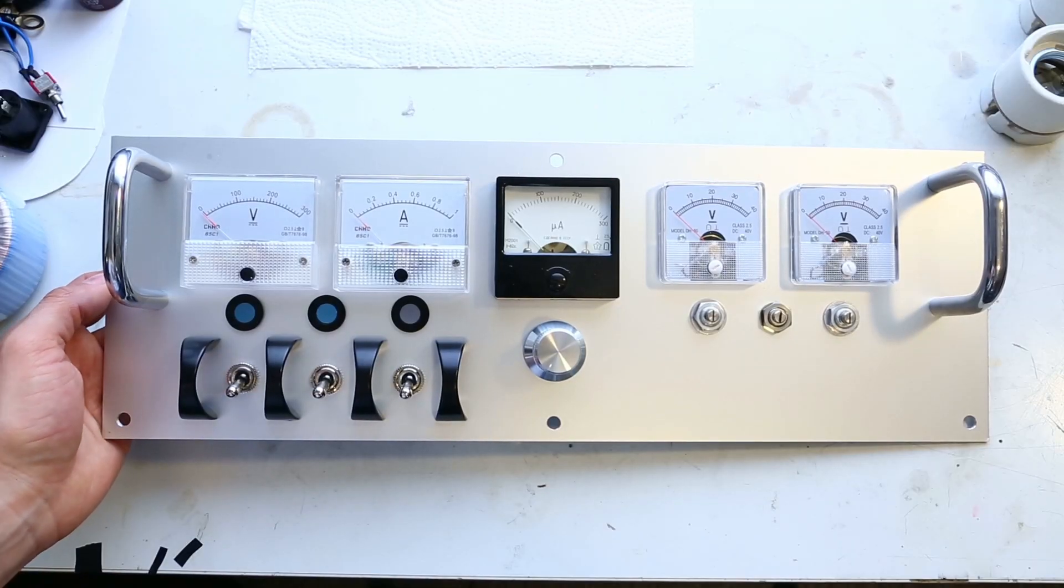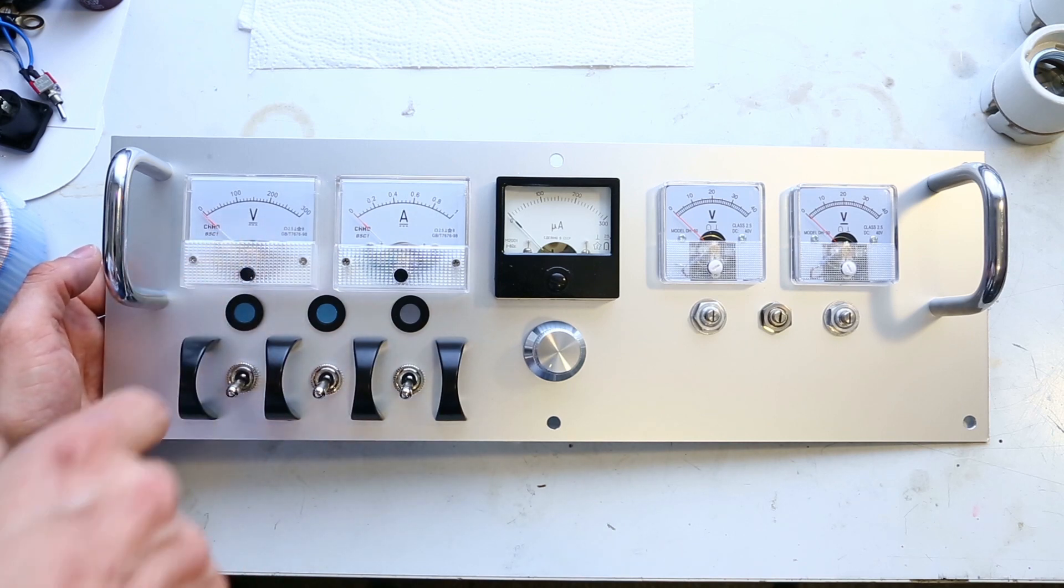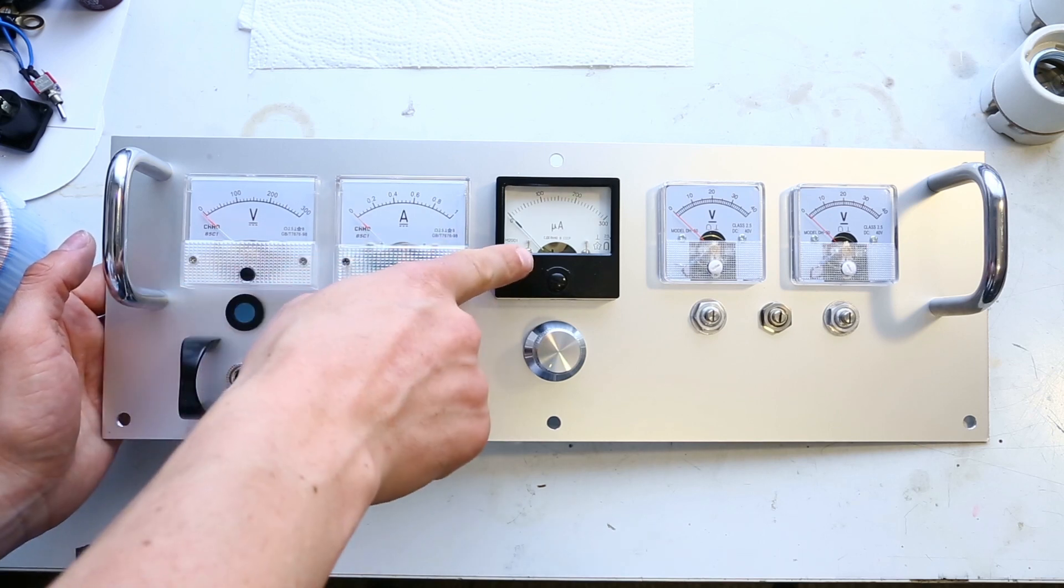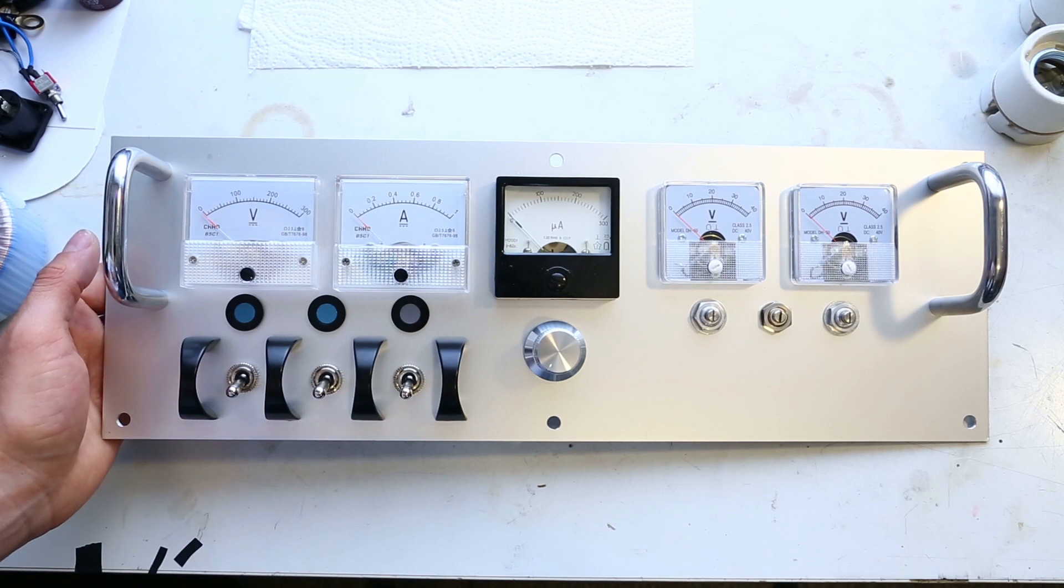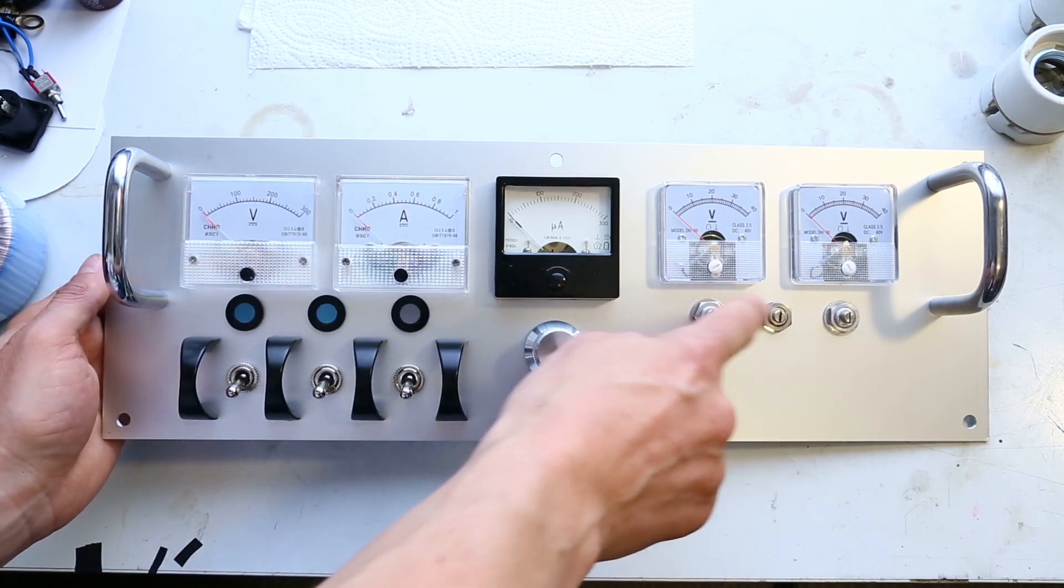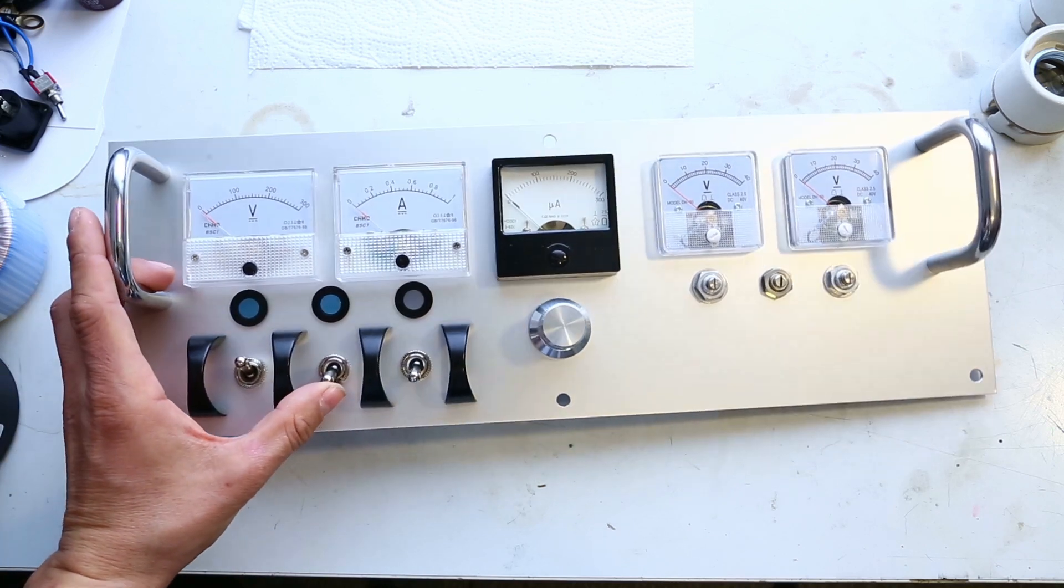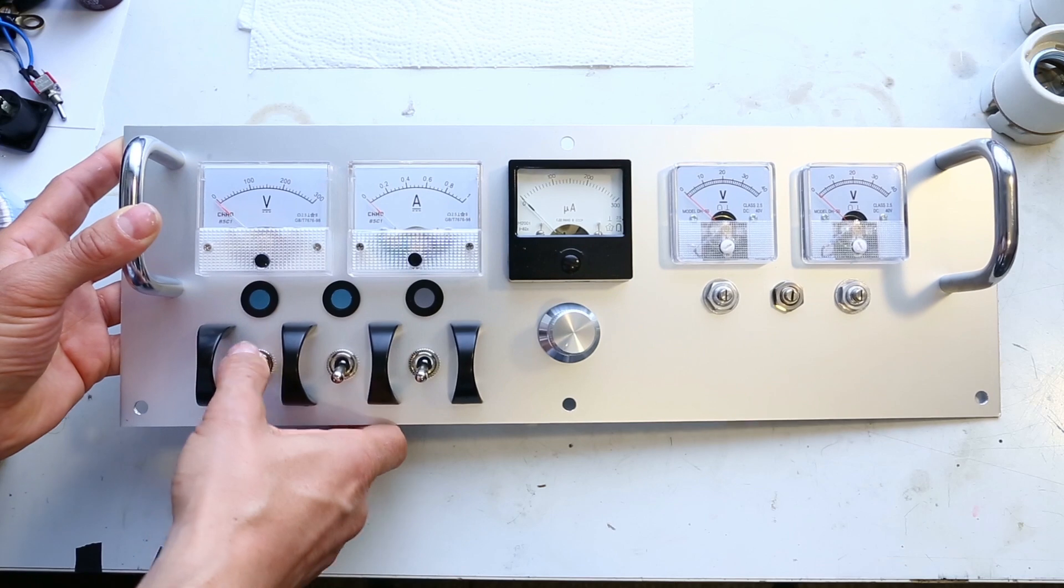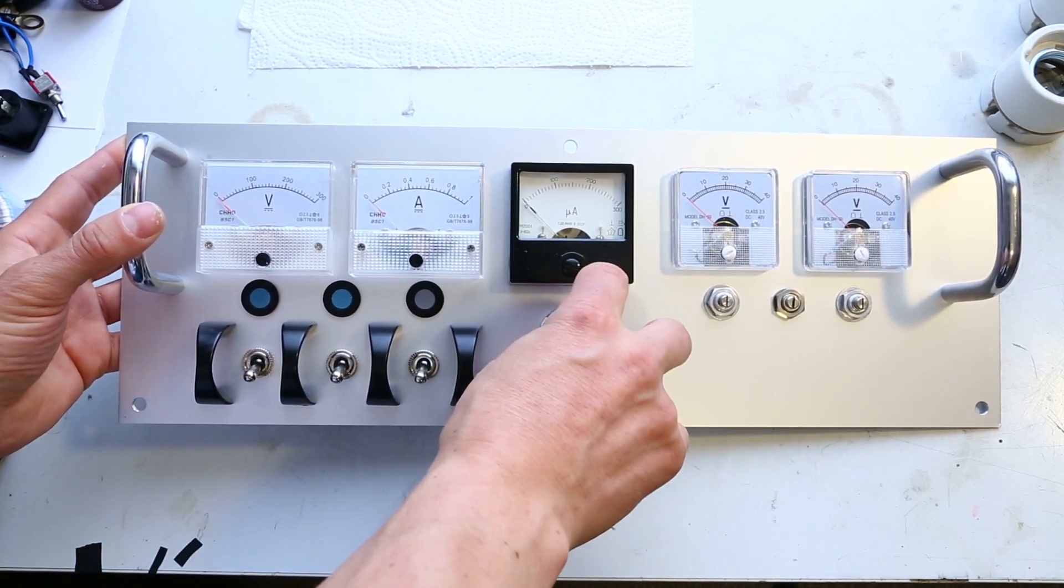And here I have the phase plate. There are different measuring instruments on it. This one is for the grid 2 voltage. Here for the total current consumption, the output power and the two negative grid 1 voltages. And the pots for adjusting. And here are the power switches for the different stages. And a pot knob for the volume or the gain.